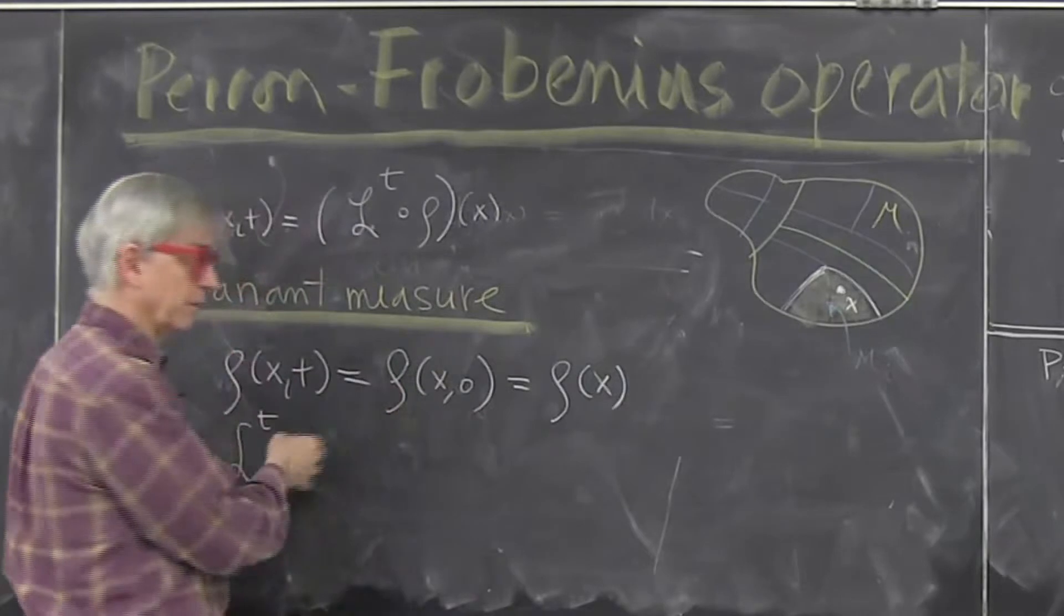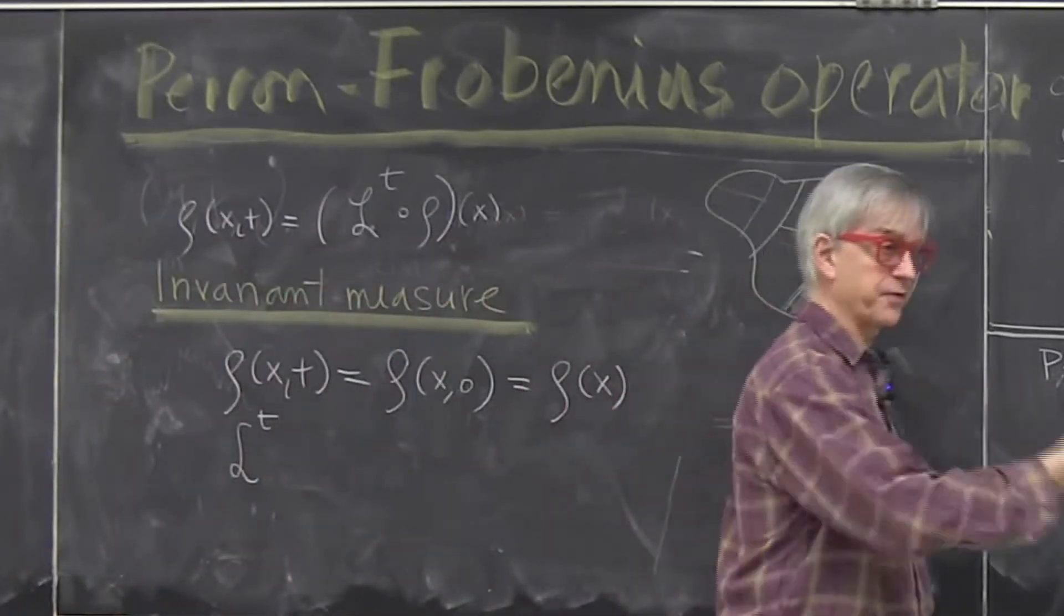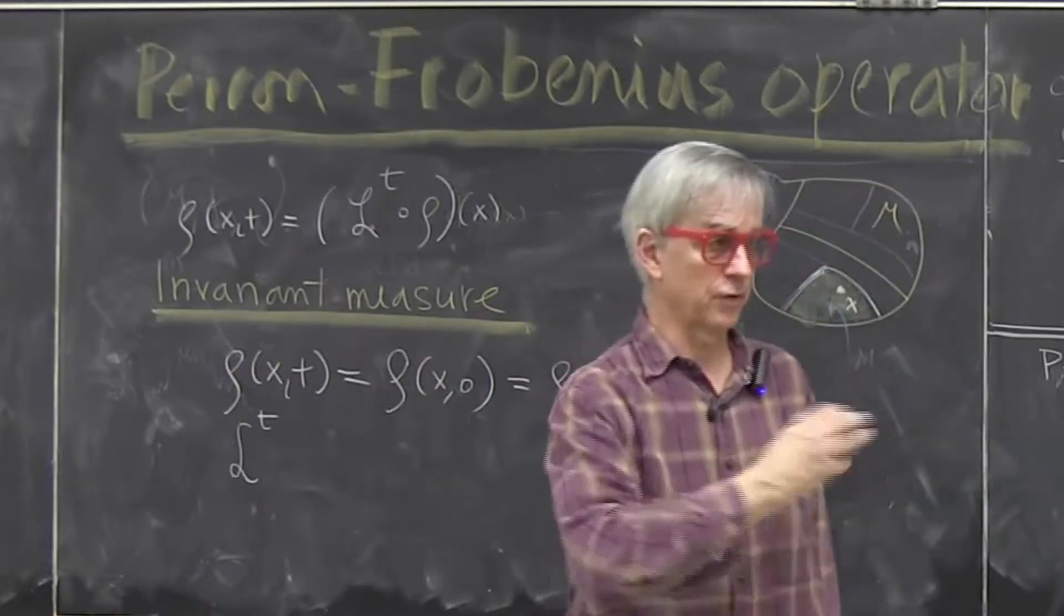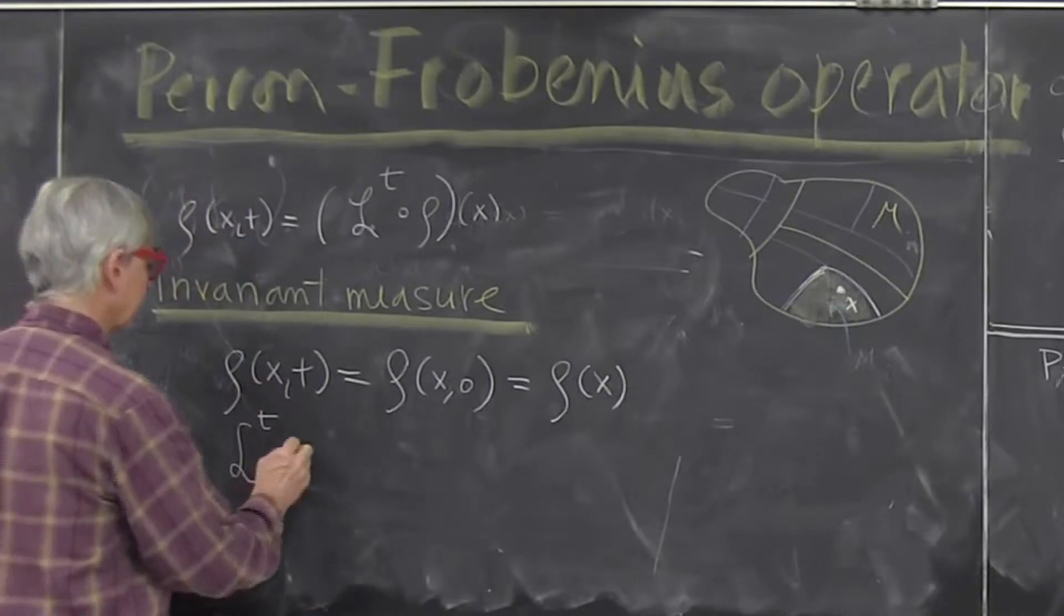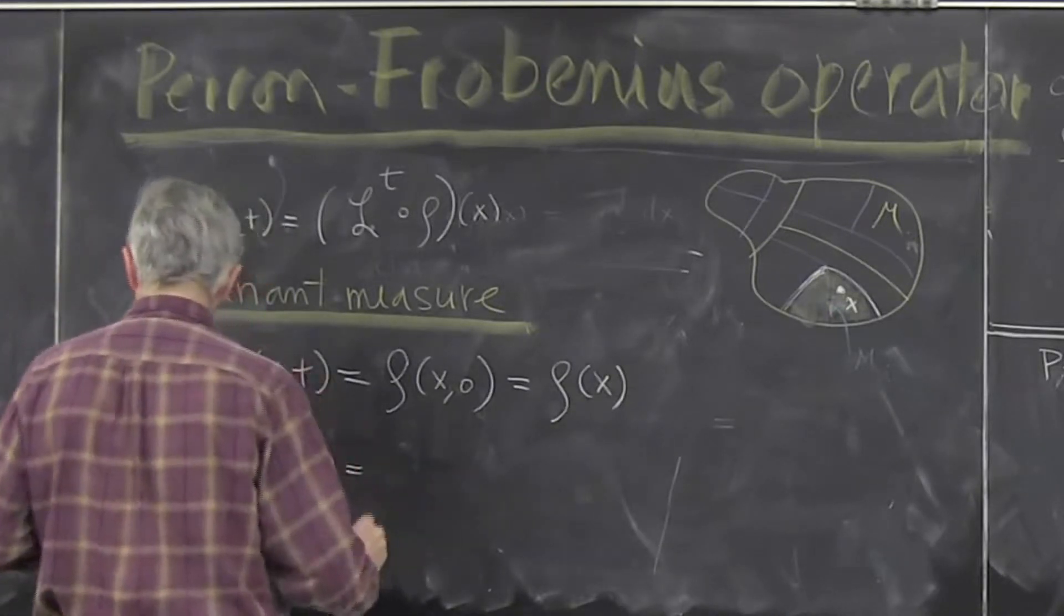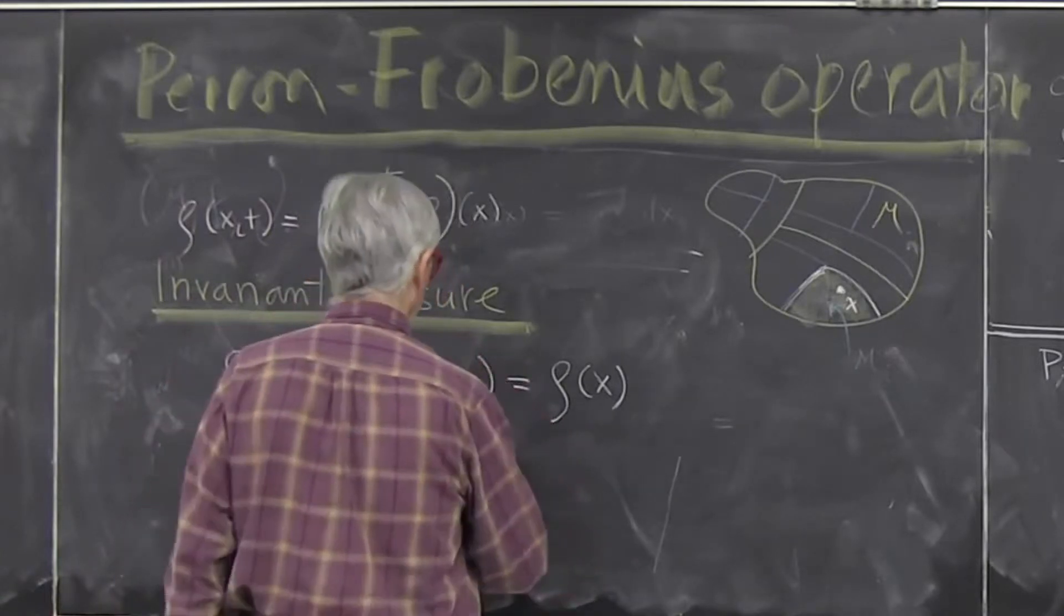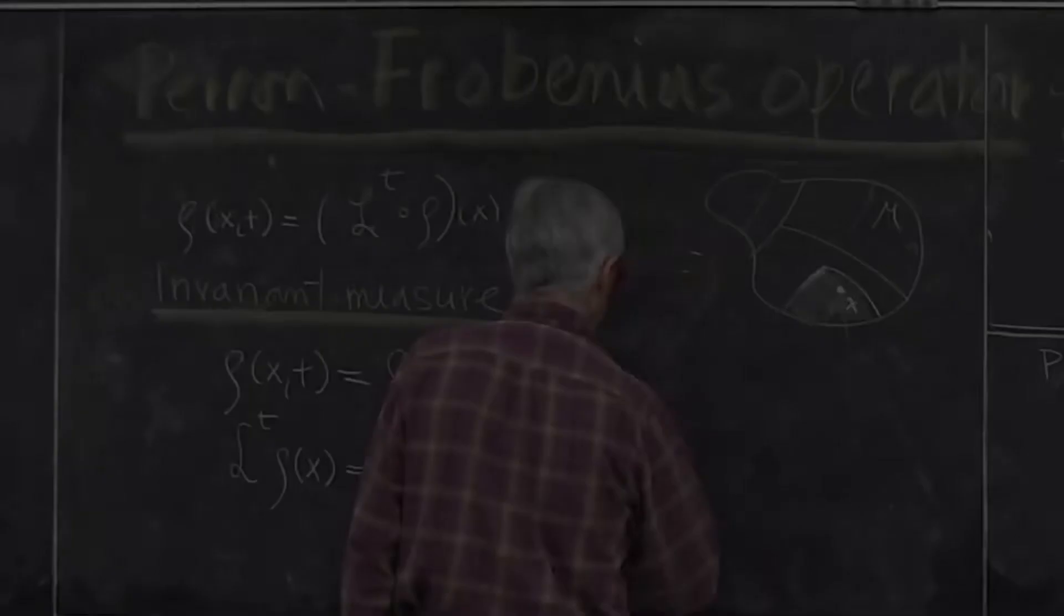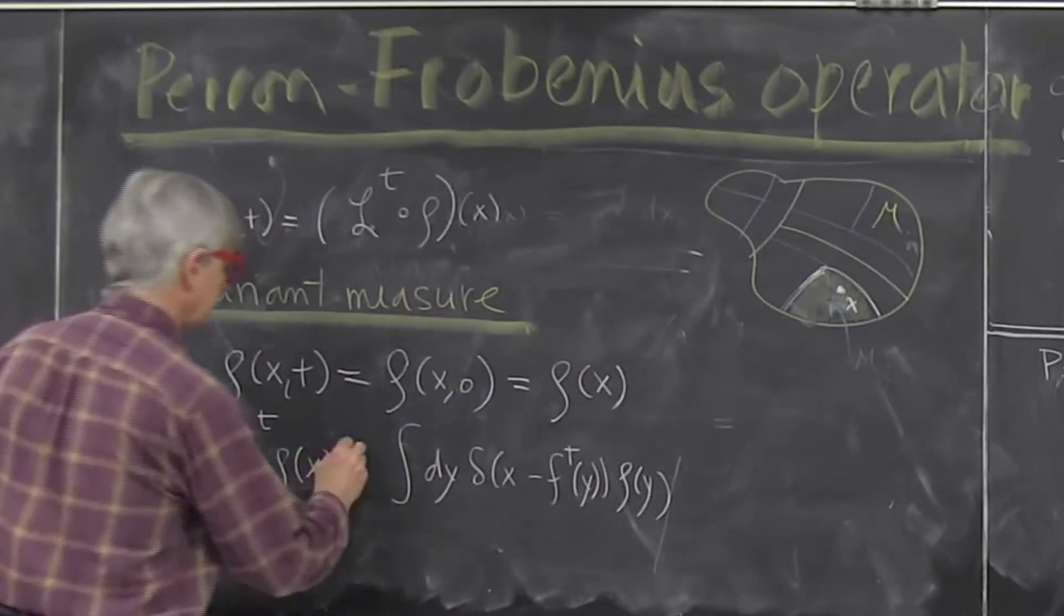But if you don't like it, you can always coarse grain, and in that case operator is a matrix that maps volumes in coarse graining. So this is something that does to the density. And what it does, it's an integral over all initial conditions. That's our definition of what Perron-Frobenius operator does by definition.